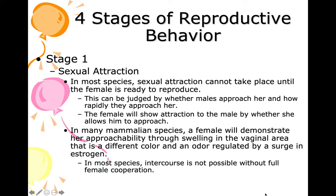Other animals — cows, horses, sheep, dogs, cats, mice — the female has to be ready to reproduce before any sexual attraction takes place or sexual intercourse can potentially happen. This can be judged by whether males approach her. The female will show attraction to the male by whether she allows him to approach. If she's not ready to reproduce yet, she may be starting to put off pheromones but will still repel the male, as we especially see in dogs.